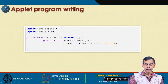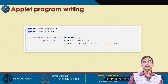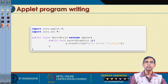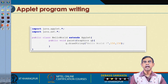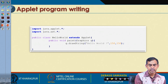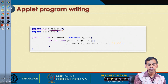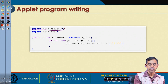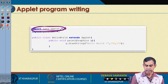Now, how can we write an Applet? It is very simple. Here is the simplest code that an Applet can be — the Applet we just showed is basically produced from this program. To write an Applet, we have to import java.applet.* because Applet programming uses many classes, methods, and constructors from the Applet class.